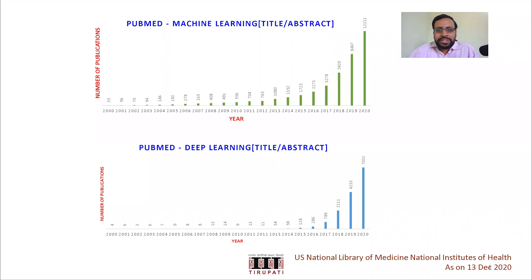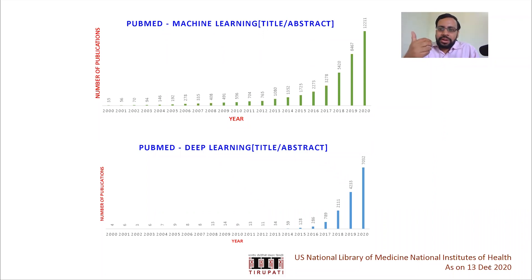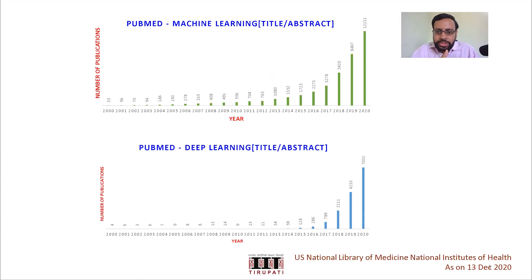This graph tells you something interesting. You can also do this: there is PubMed — most of you might know it, it's the US National Library of Medicine National Institutes of Health. I used it to see how publication trends are going. The first graph shows papers with the keyword 'machine learning' either in the title or abstract, counted as number of publications in internationally recognized, authentic journals, from 2000 to 2020.